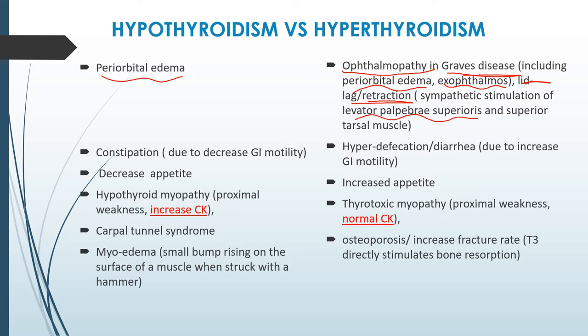In the gastrointestinal findings, hypothyroid individuals suffer from constipation due to decreased GI motility, whereas hyperthyroid individuals suffer from hyperdefecation or diarrhea due to increased GI motility. In hypothyroidism there is decreased appetite, whereas in hyperthyroidism there is increased appetite.